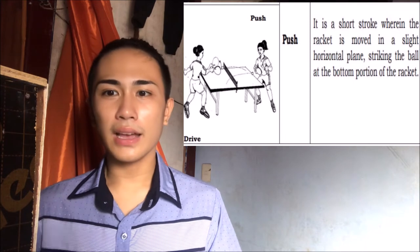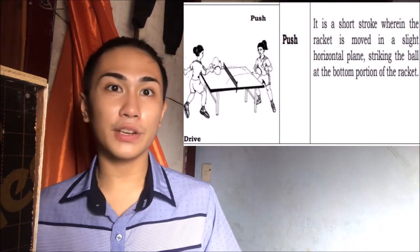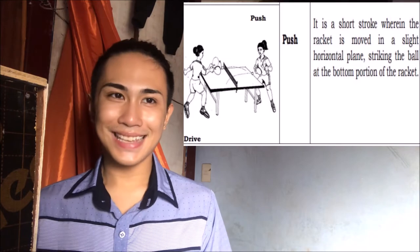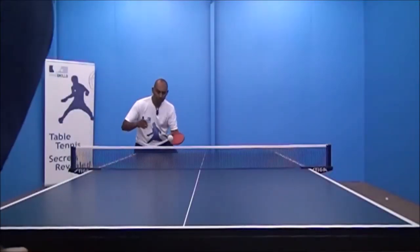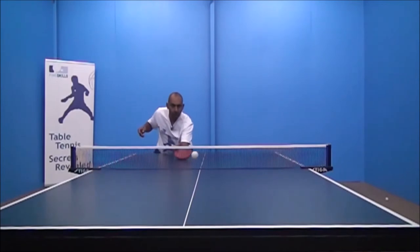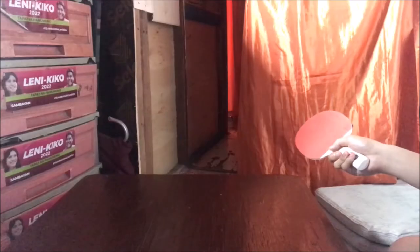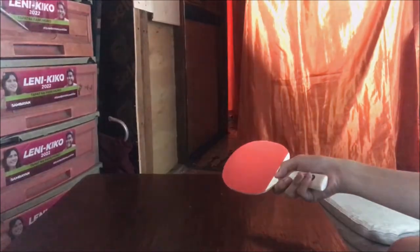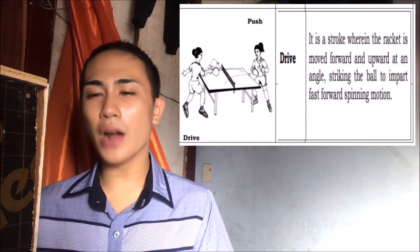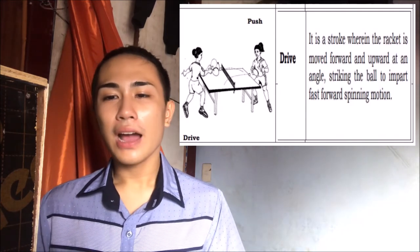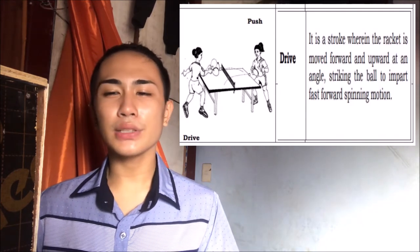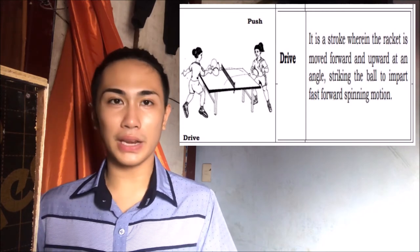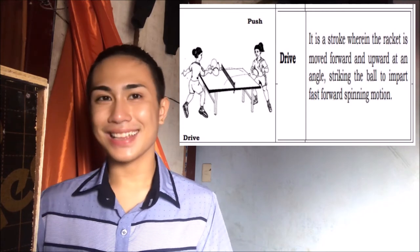The third hit is the push, which is a short stroke where the racket is moved in a slight horizontal plane, striking the ball at the bottom portion of the racket. The fourth is the drive, which is a stroke where the racket is moved forward and upward at an angle, striking the ball to impart a fast forward spinning motion.